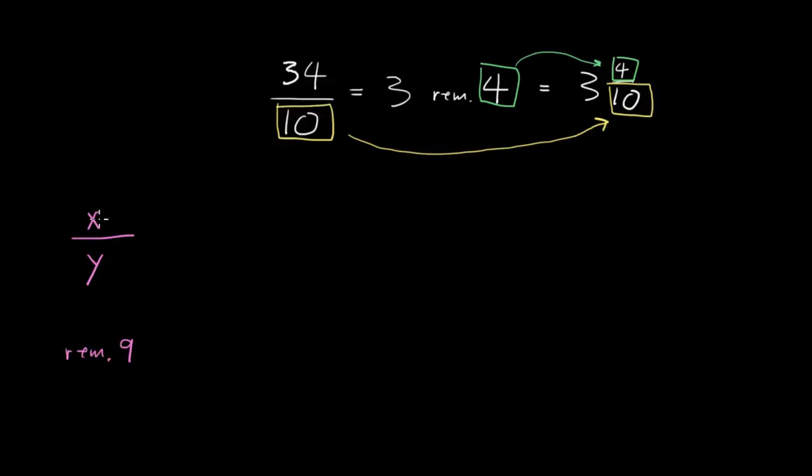And we're told that when positive integer x is divided by positive integer y, we get 96.12. And we're asked for the value of y. For the value of this denominator here, which I guess is analogous to our denominator up here, this 10.